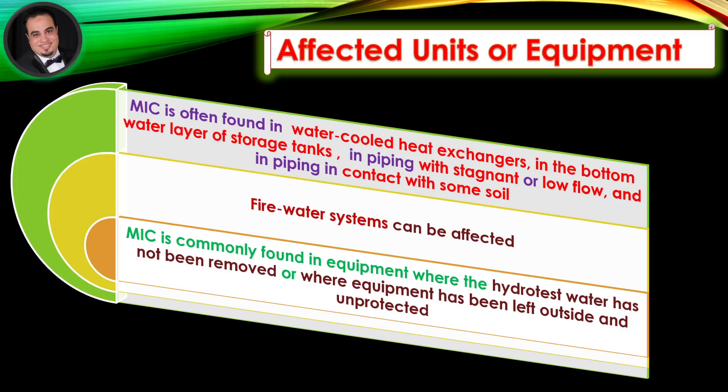Fire water systems can be affected. Microbiologically influenced corrosion is commonly found in equipment where the hydro test water has not been removed, or where equipment has been left outside and unprotected.